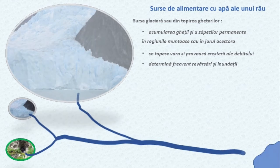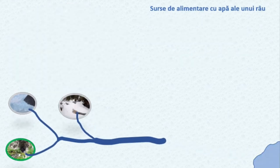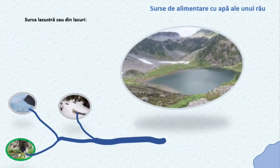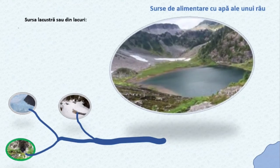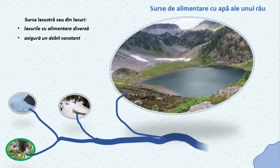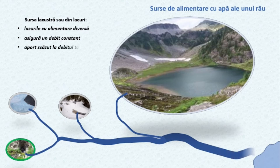Această sursă de alimentare cu apă a râurilor este, în fapt, o acumulare rezultată din alte surse. Cele mai multe se găsesc în zonele montane și au origine glaciară, iar apa acumulată poate fi rezultată din topirea zăpezilor sau a gheții, din ploi sau din apele freatice.